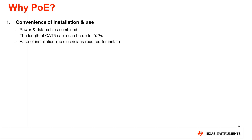A common question is: why use PoE? One main reason is the ability to send power and data over the same cable up to 100 meters from an AC outlet. For example, when installing a security camera in a corner of a room where there's no AC outlet, PoE lets you place the camera wherever needed without requiring an electrician for installation.